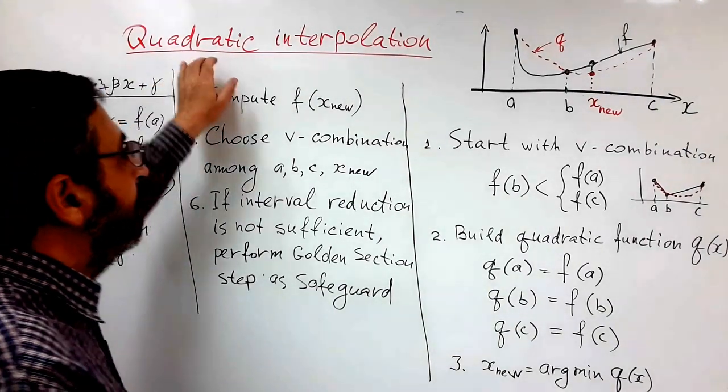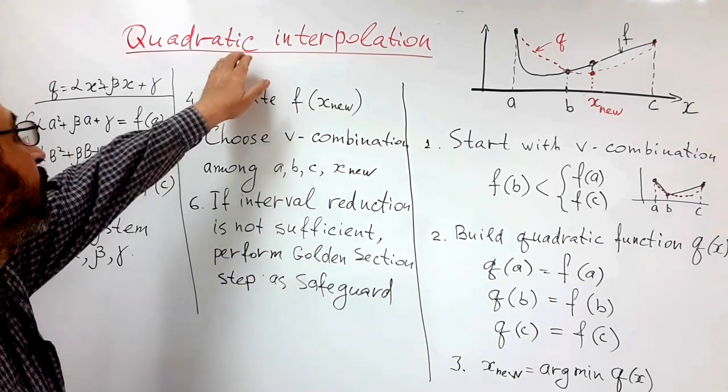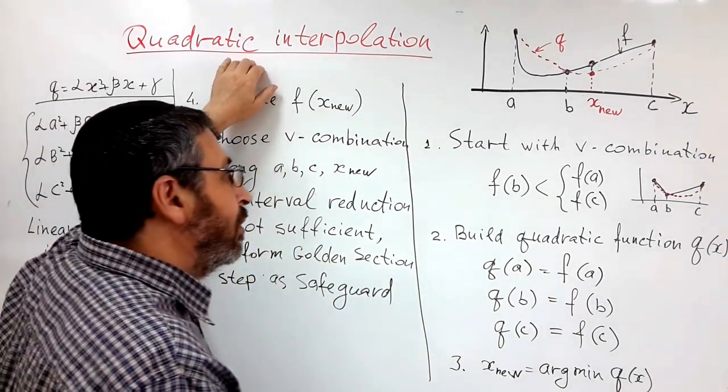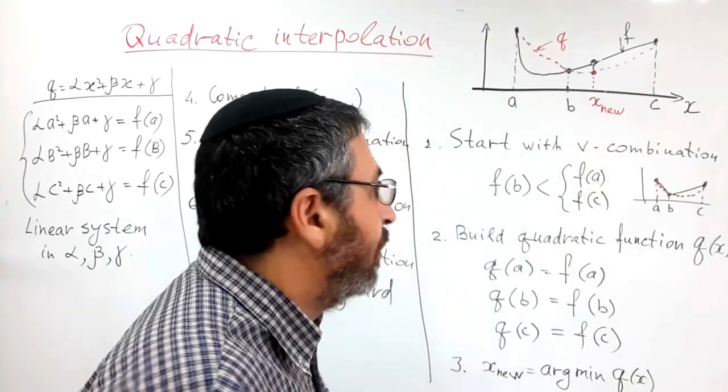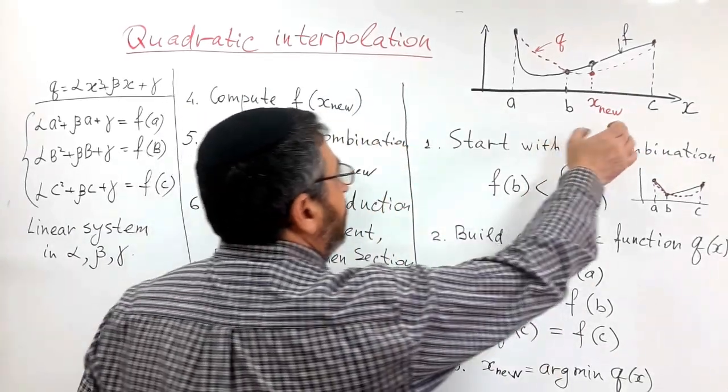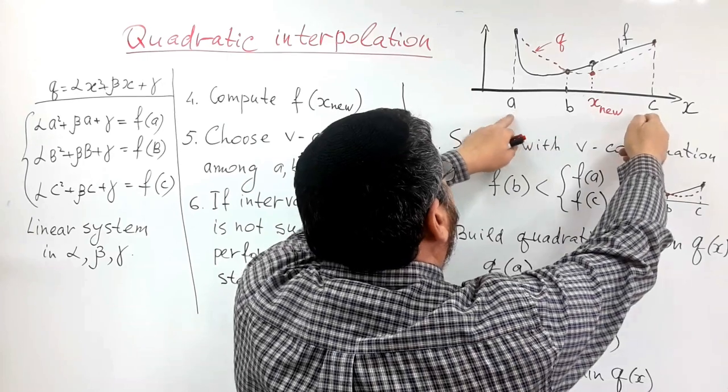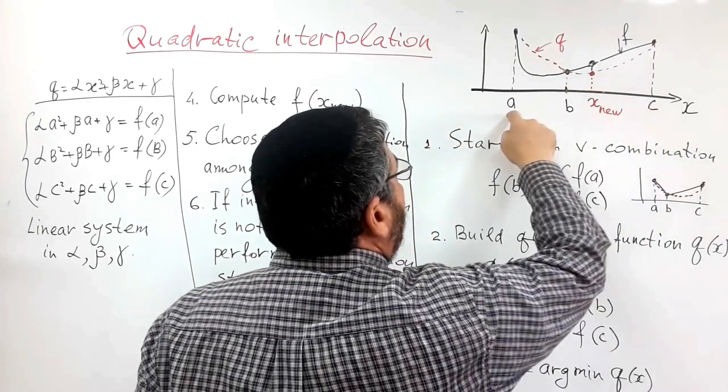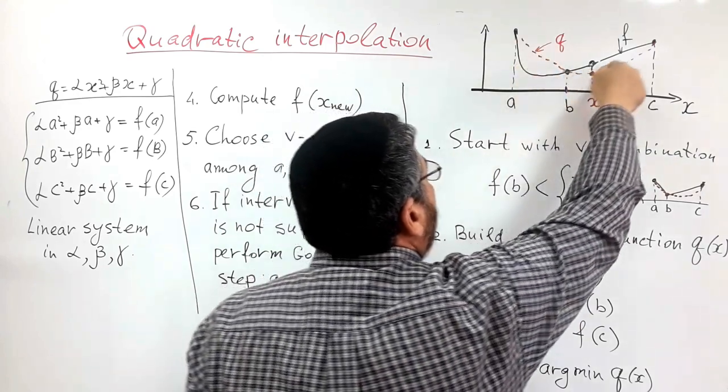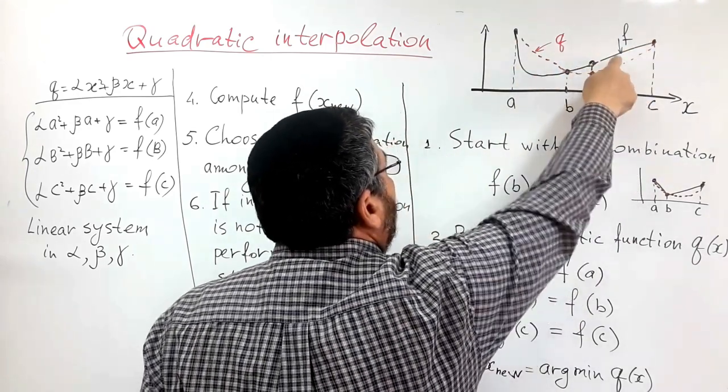Now let us talk about quadratic interpolation method for finding minimum of a function of one variable. We assume that we are given an interval where the minimum is located, say AC, and we want to find minimum of function F.